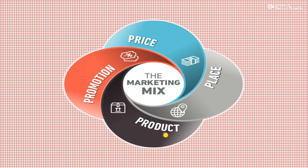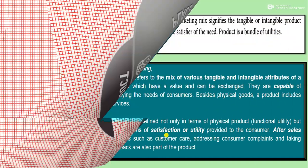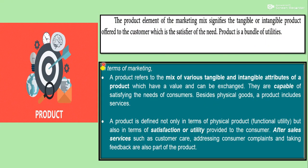Before discussing product mix, let us first understand what is product. The product element of marketing mix signifies the tangible or intangible product offered to the customer, which is a satisfier of the need. Product is a bundle of utilities. A product is any tangible or intangible factor that is satisfying the customer's need — and a product doesn't just satisfy needs, it has a bundle of utilities.